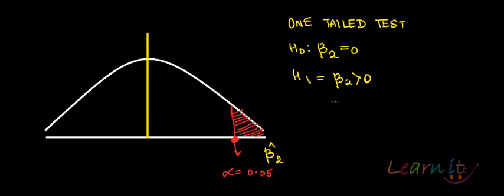So, in case if it would have been beta 2 less than 0, then you would have put the entire 5% on this side, you would have put the entire 5% on this side and would have actually found out in case if your beta 2 is lying here or not, okay.